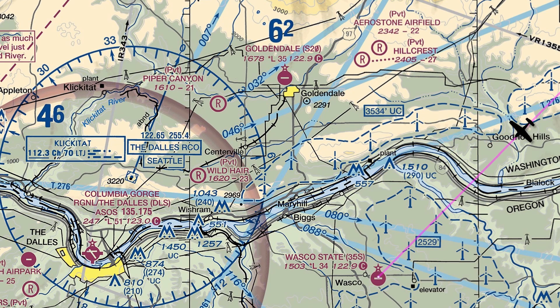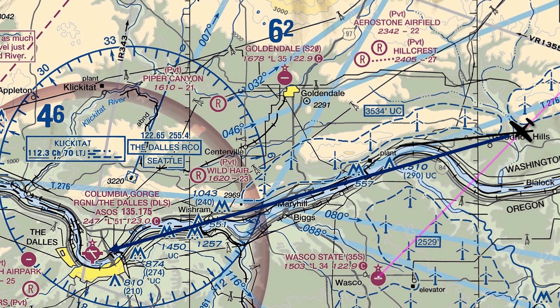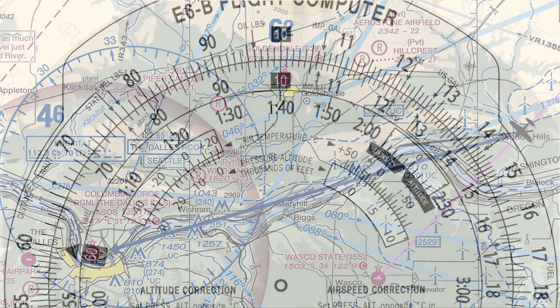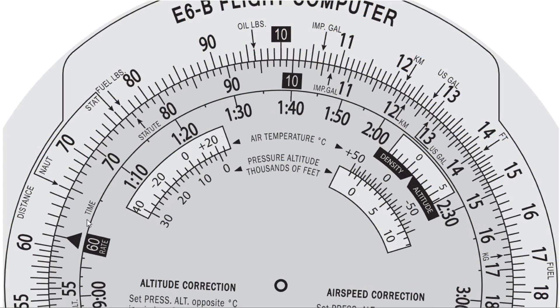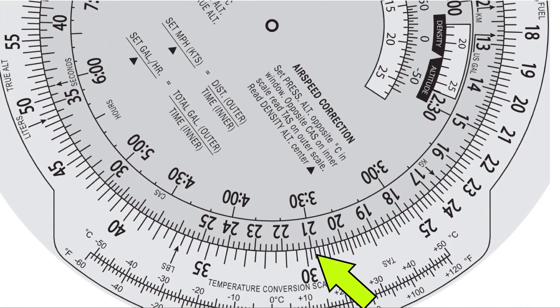Next, we'll want to work out what kind of ground speed we can expect. On our original navlog, we noted winds aloft at our cruise altitude of 240 degrees at 17 knots, which gave us a ground speed of 89 knots. That was for our original on-course heading of 213 degrees. We've turned to the right into that southwesterly wind, so our ground speed will be reduced — let's say down to 85 knots. We're at 85 knots needing to travel 30 miles, which is about a third of an hour, or 20 minutes. Using the E6B — spinning the 60 on the inner scale to line up with 85, we read where 30 on the outer scale lines up — it's 21 minutes.